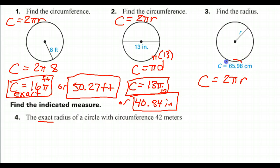So I can just take this circumference and put it here for c. So this becomes 65.98 is equal to 2 pi r.